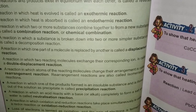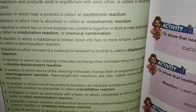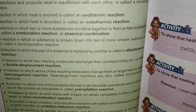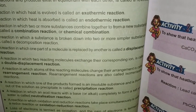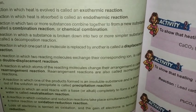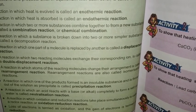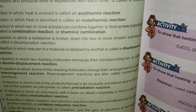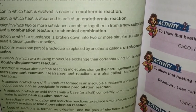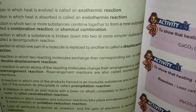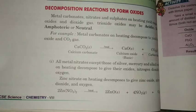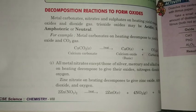In the previous class we discussed oxidation and reduction reactions, and also oxidizing agents and reducing agents. We defined oxidation and reduction on the basis of oxygen and hydrogen — addition of oxygen and removal of hydrogen leads to oxidation; reduction is the opposite. On the basis of electrons, oxidation means loss of electrons and reduction means gain of electrons. Today we are going to discuss decomposition reactions to form oxides.